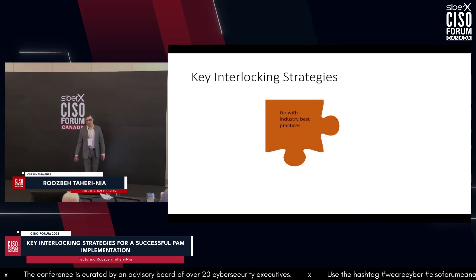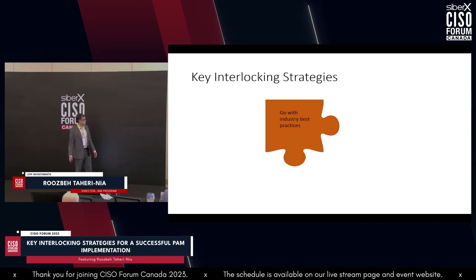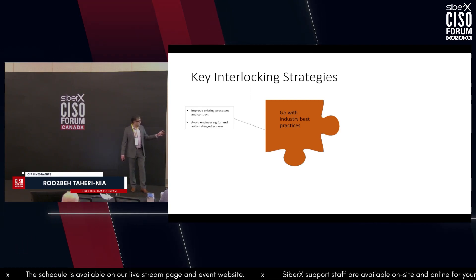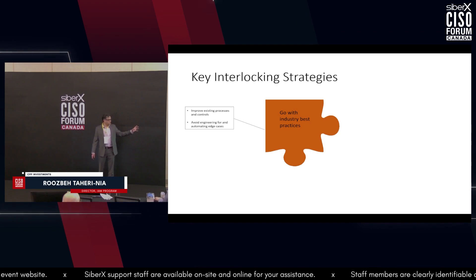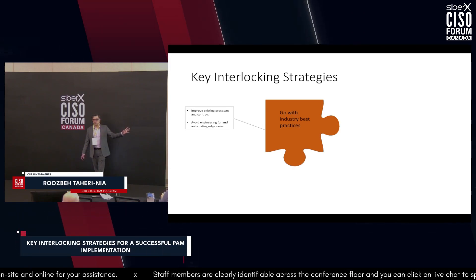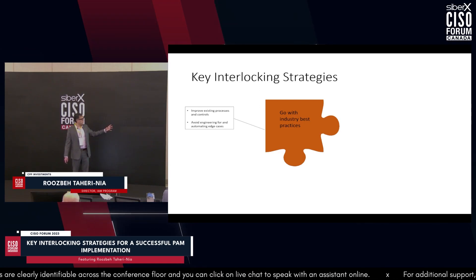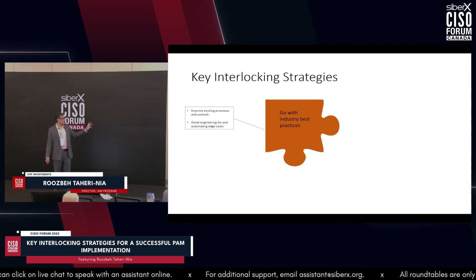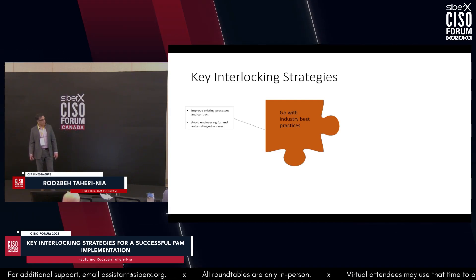Starting with going with industry best practices. As you implement your PAM program and stand up PAM technology, don't use the technology to automate bad controls. As you spend budget, time, and effort, take the time to improve the existing processes and controls. Automating legacy processes that are not in line with industry good practices is often one of the ways PAM programs fail to achieve their full potential.